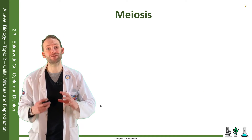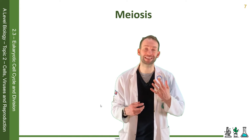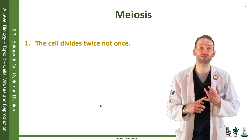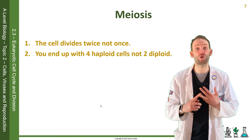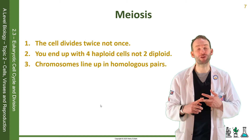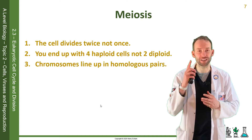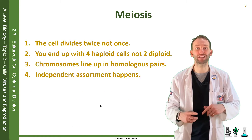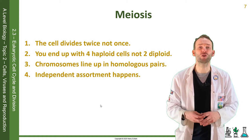Meiosis is very similar to mitosis in lots of ways, but there are five things that are different. First of all, the cell divides twice, not once. Secondly, as already mentioned, you produce four haploid cells, not two diploid. Thirdly, chromosomes line up in what we call homologous pairs, not an individual line. And fourthly, independent assortment happens, along with another important process that increases variation, which is called crossing over.